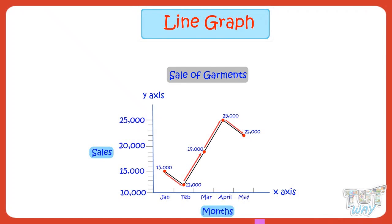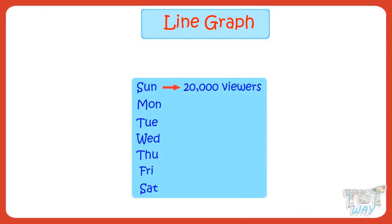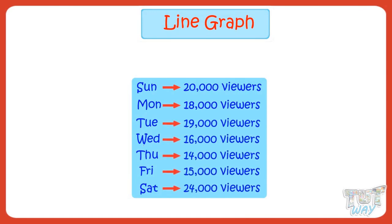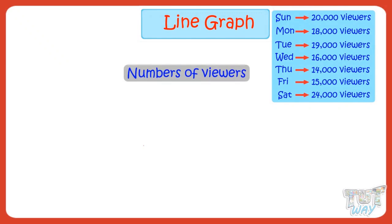So kids, we learned how we can make a line graph for given data and also how to read it. Now let's make one more line graph for practice. Number of people who watched a particular movie was noted down for a week. We have to draw this information into a line graph. First of all, let's give a title to our graph — let it be 'Number of Viewers'.